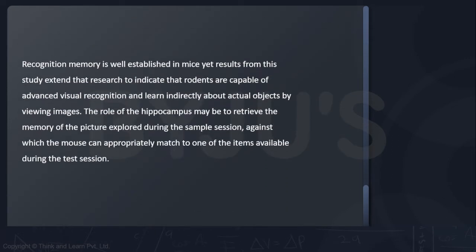Lastly, the author concludes by saying that now we know that rodents are also capable of advanced visual recognition. And in fact, they learn indirectly about actual objects by viewing images. And the author also highlights the role of hippocampus again towards the end. So this is what this passage is about. Scientific in nature and not a very difficult reading.